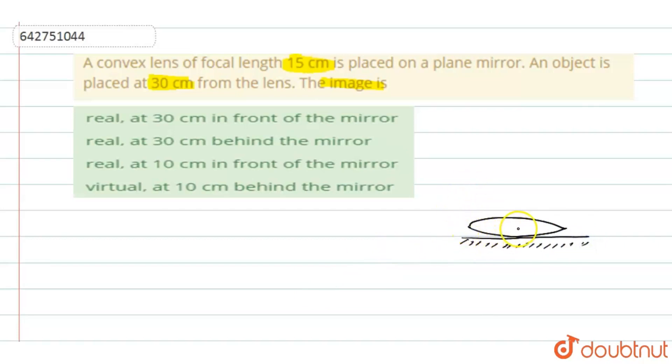So this convex lens has a focal length of 15 cm. So f is equal to 15 cm. And for this, an object is placed at 30 cm from the lens. And you have to find the image. Where is the image formed? You have to find it out.